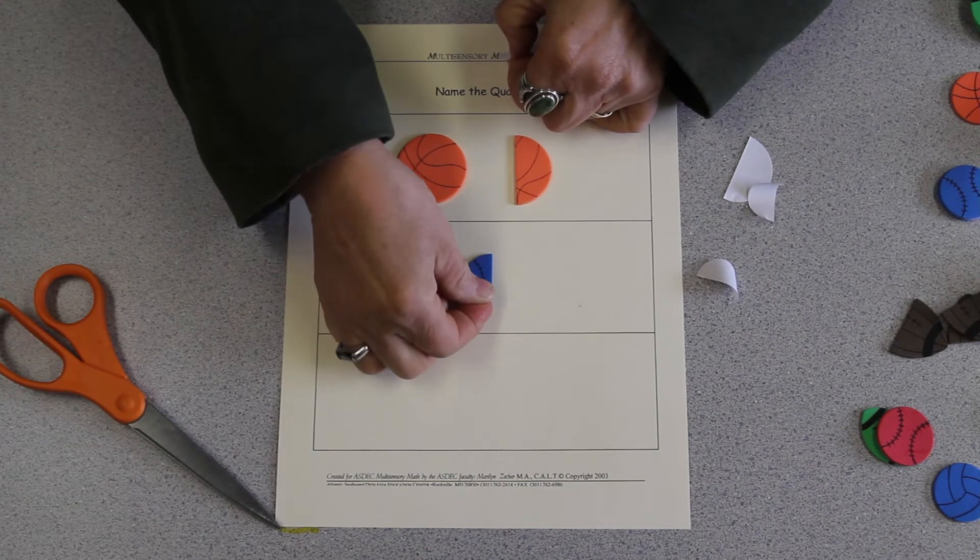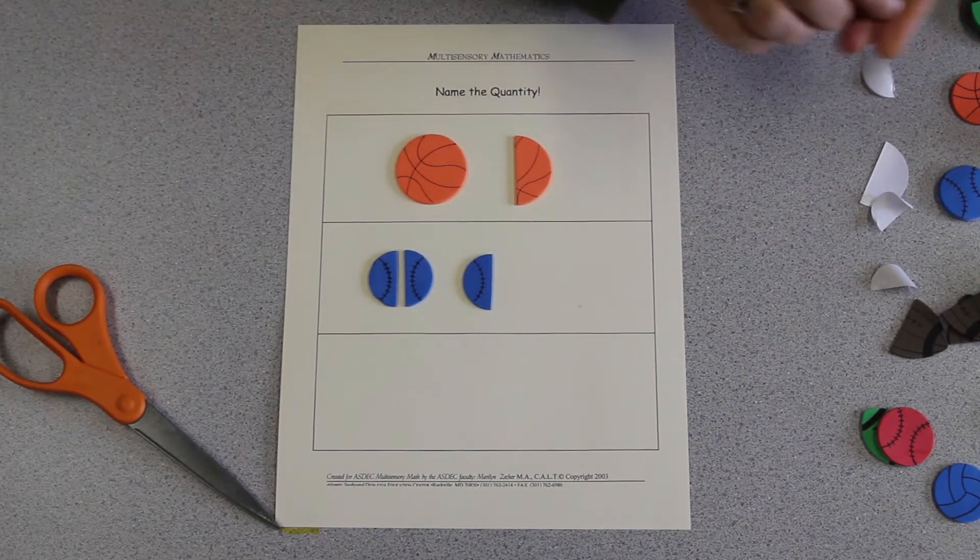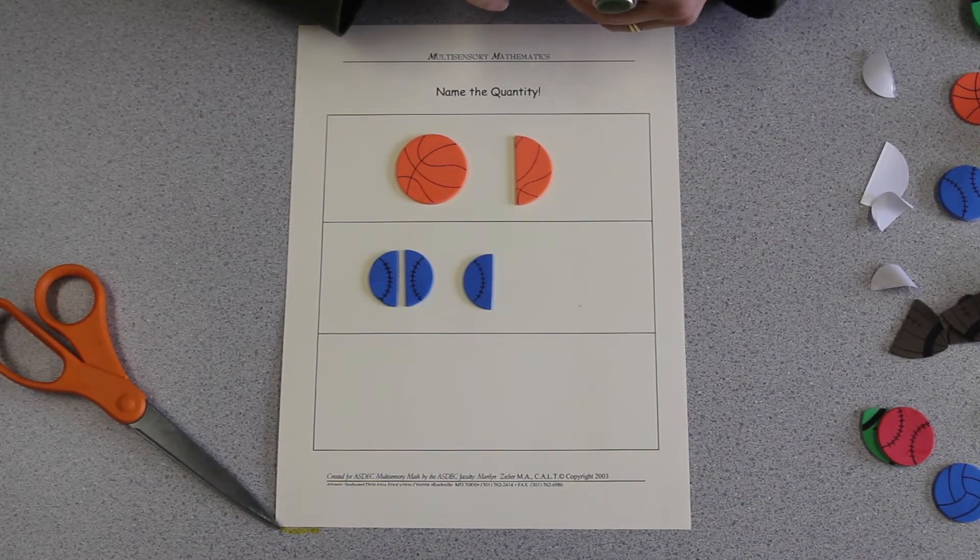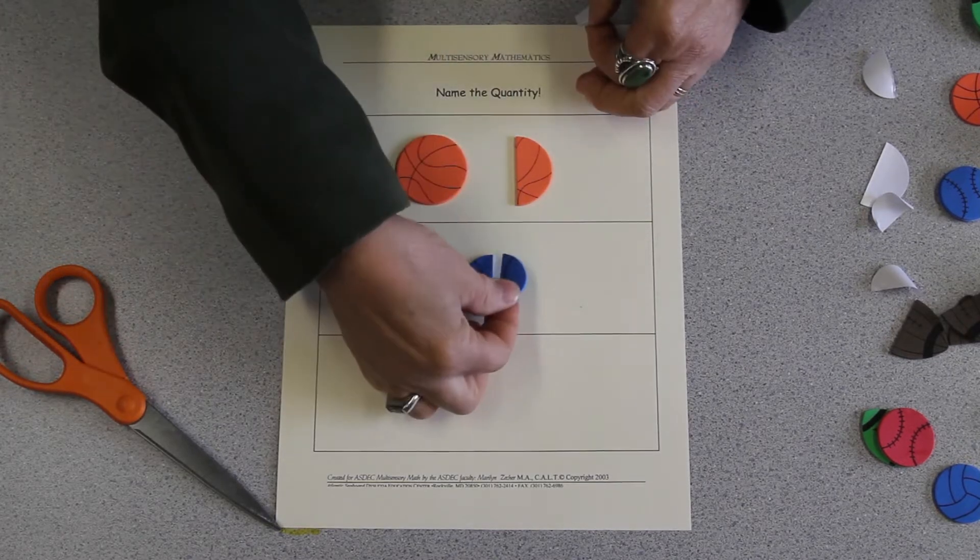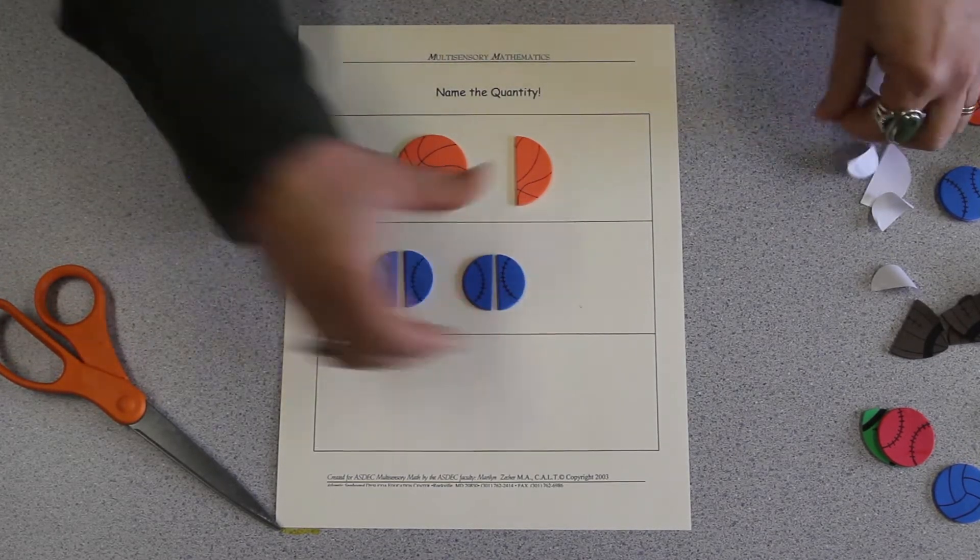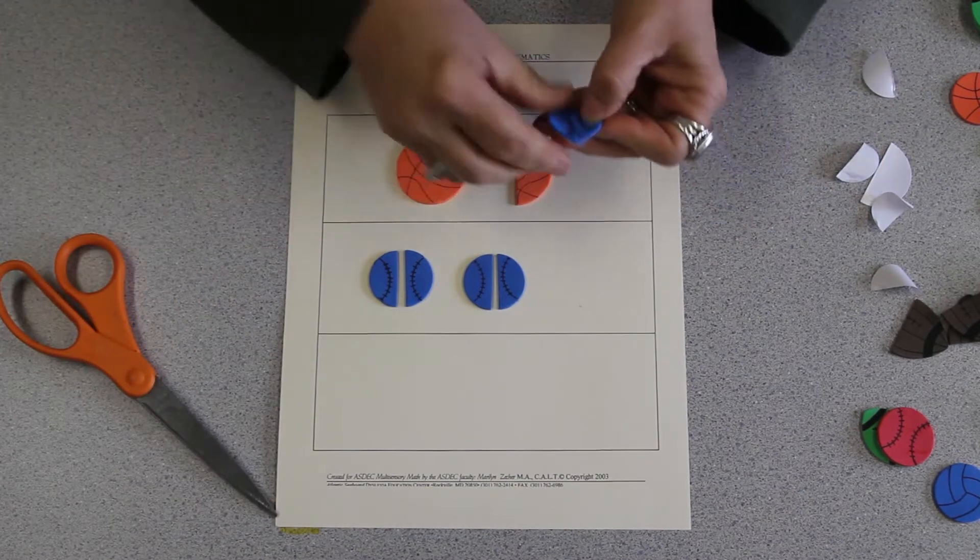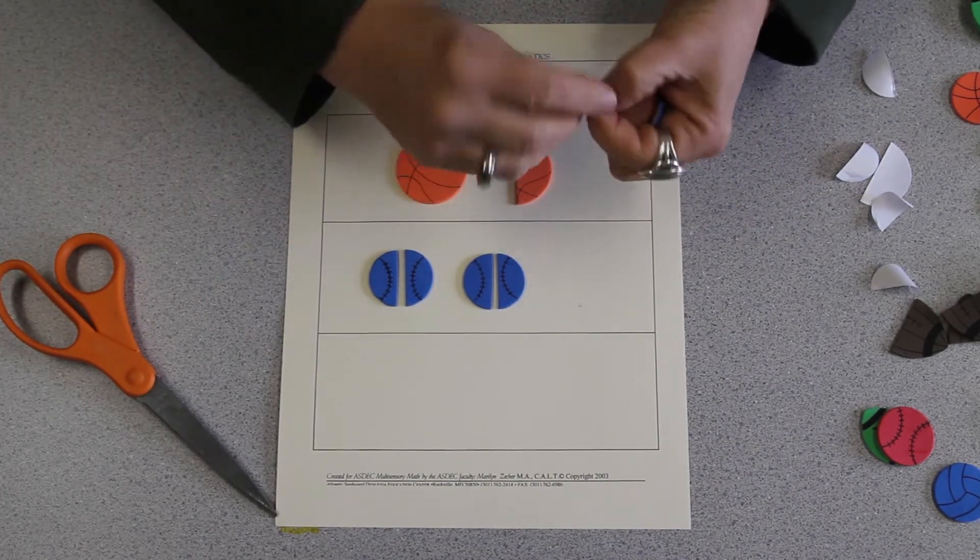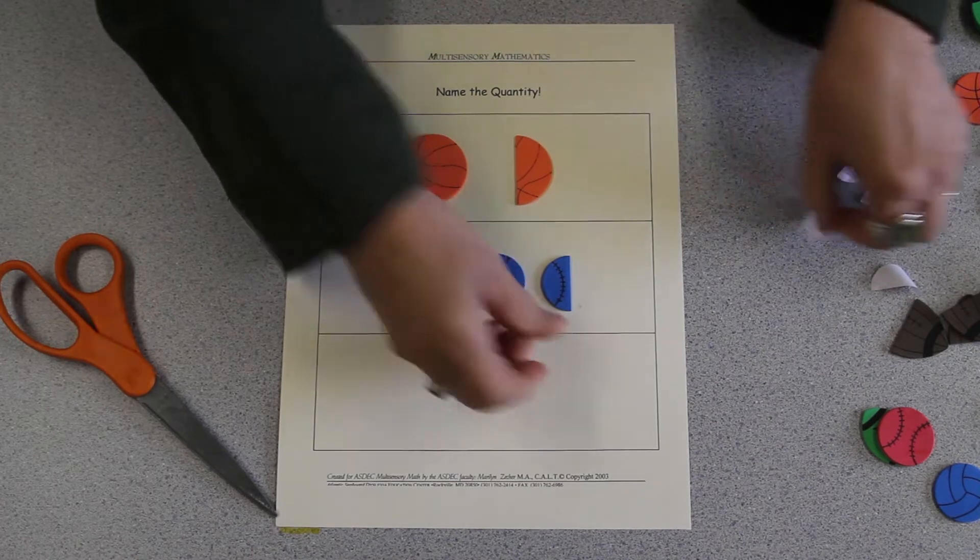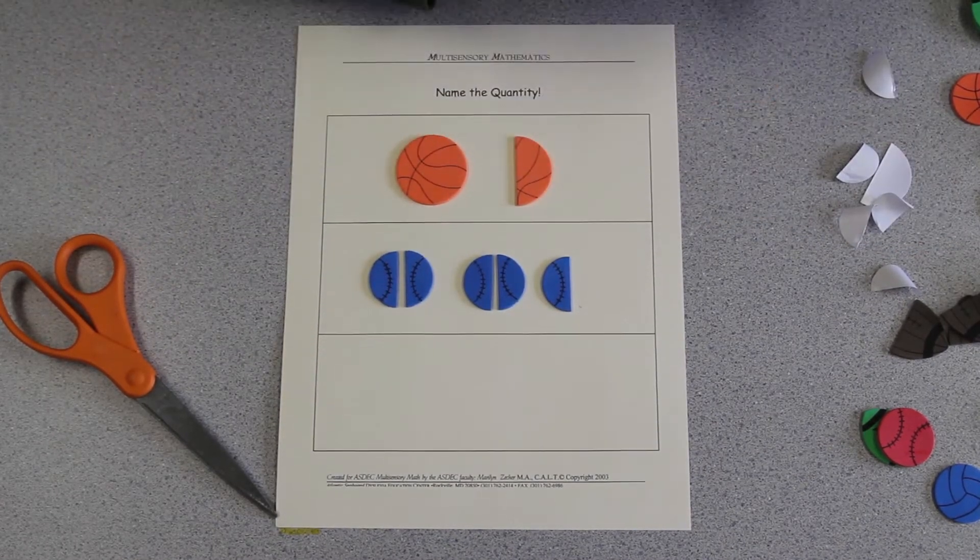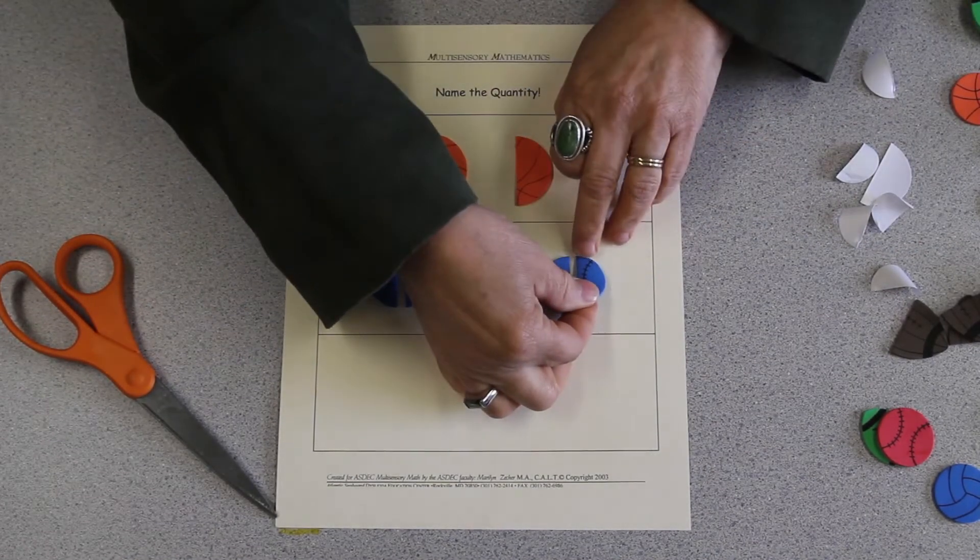I peel them, put them down, and I'm going to ask the student to tell me how many I have. In this case, I'm going to create six halves. The student is then going to say, how many halves do I have? I have six.